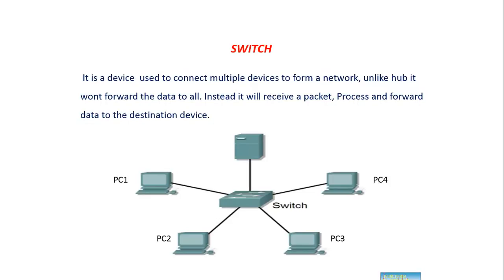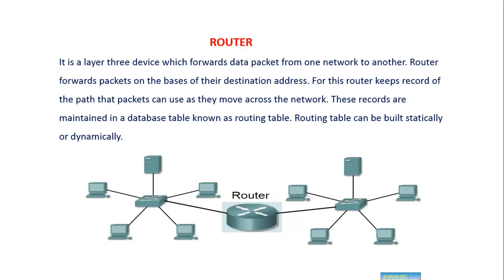A switch is a device that's used to connect multiple devices to form a network. Unlike a hub, it won't broadcast the data to all ports. Instead, it will receive a packet, process it, and forward the data to the destination device. For example, in a hub, if data is received on port 1, it's broadcasted to all remaining 7 ports. But in a switch, if PC1 wants to send data to PC4, the data will be sent only to PC4 after being processed.